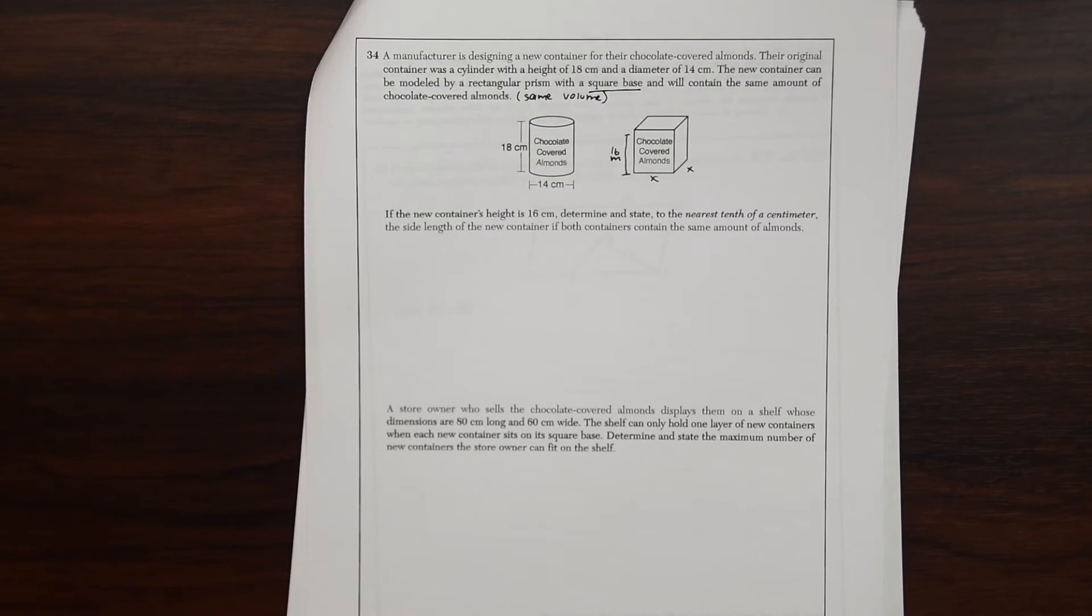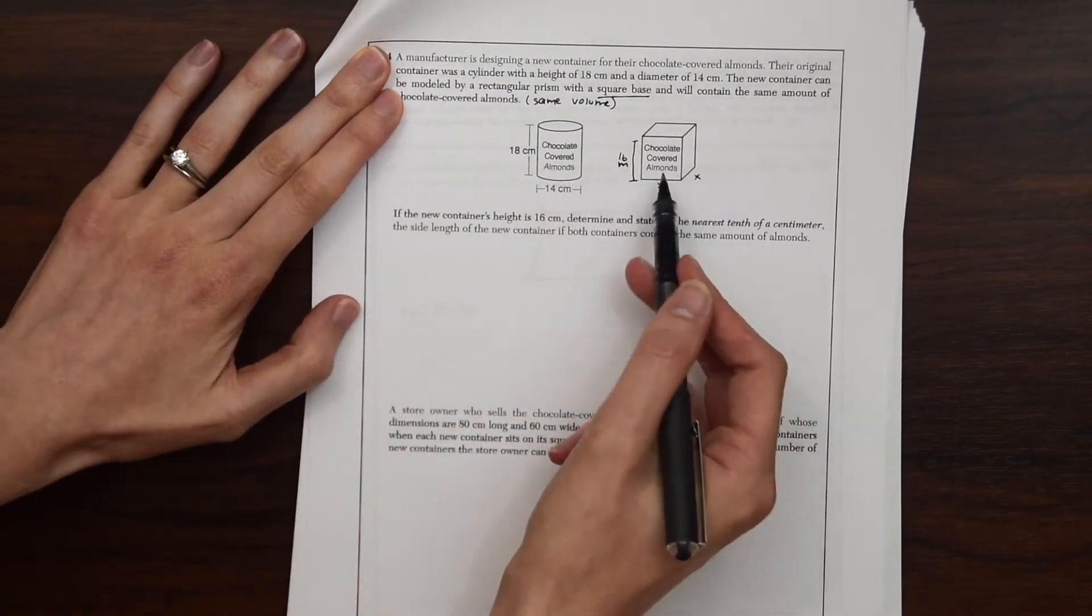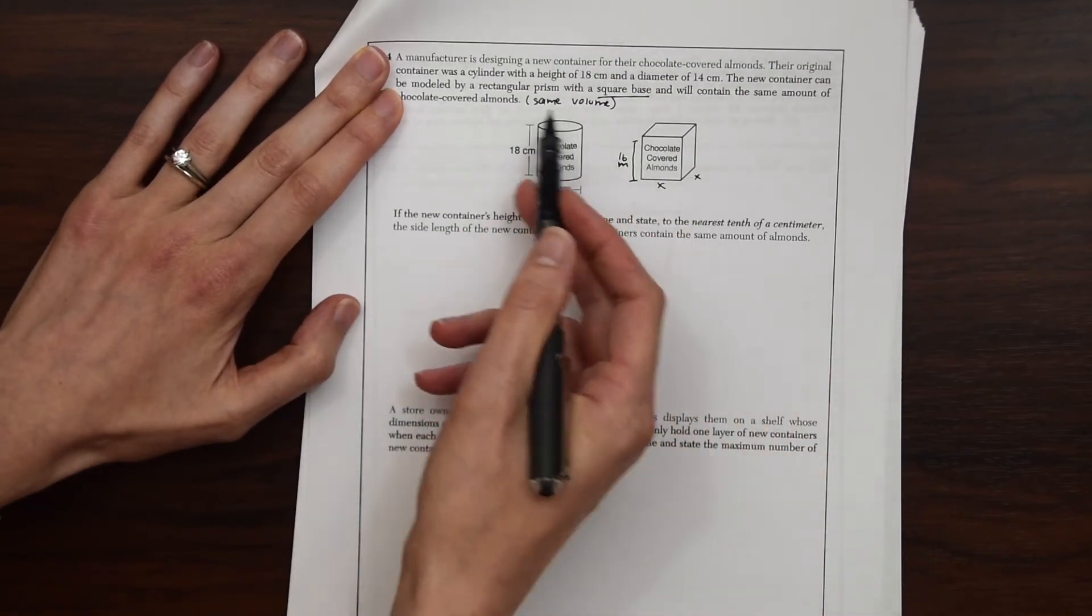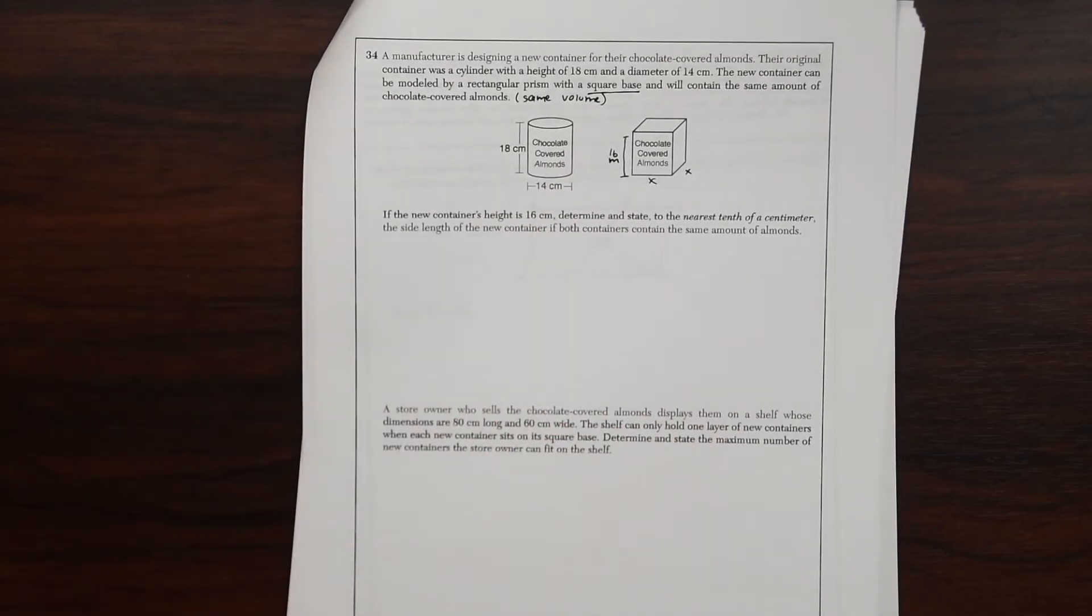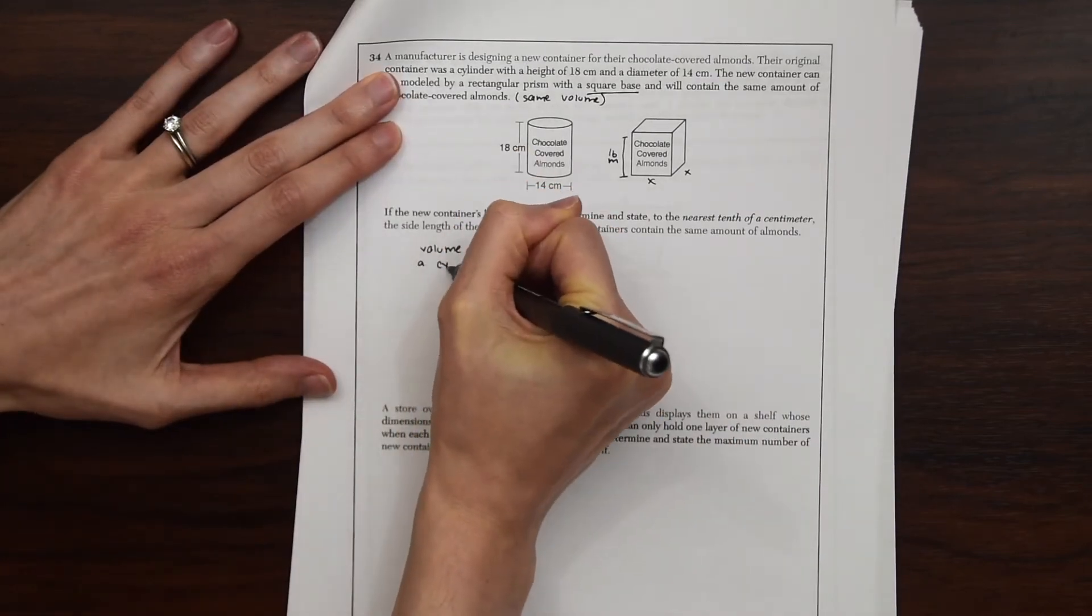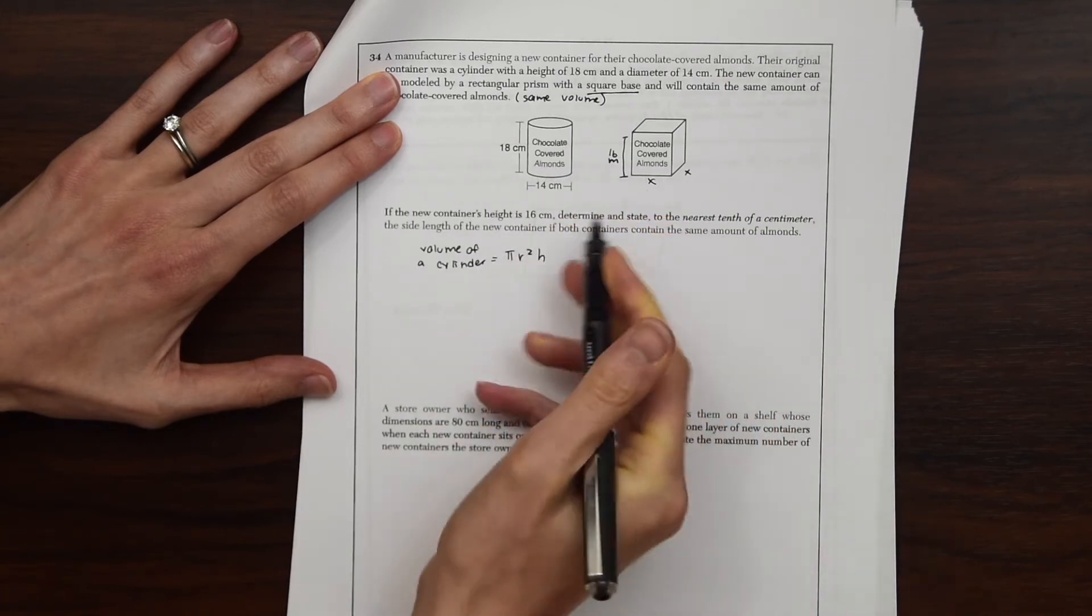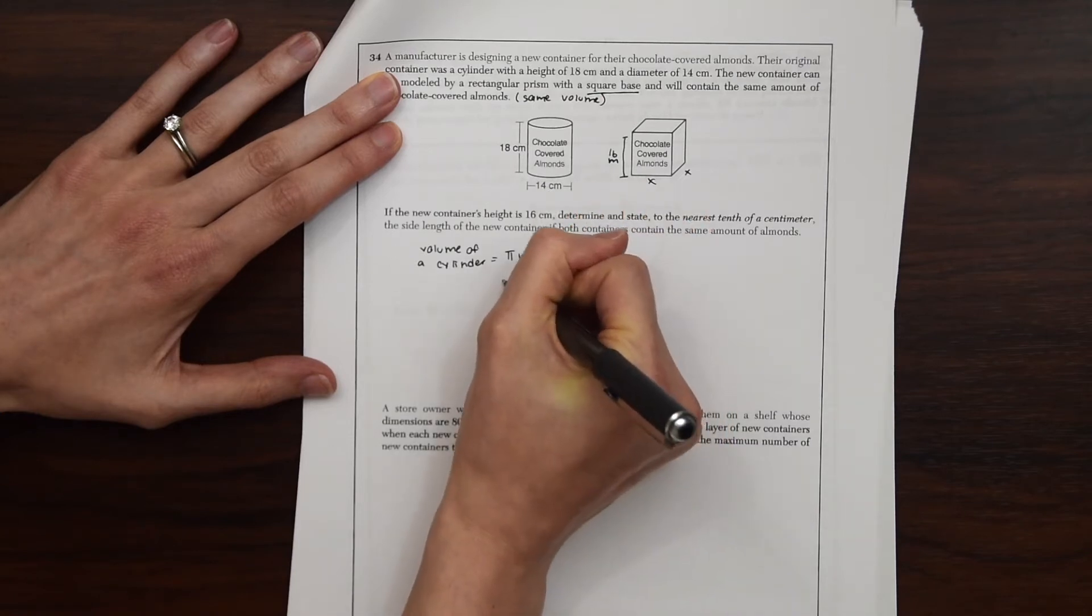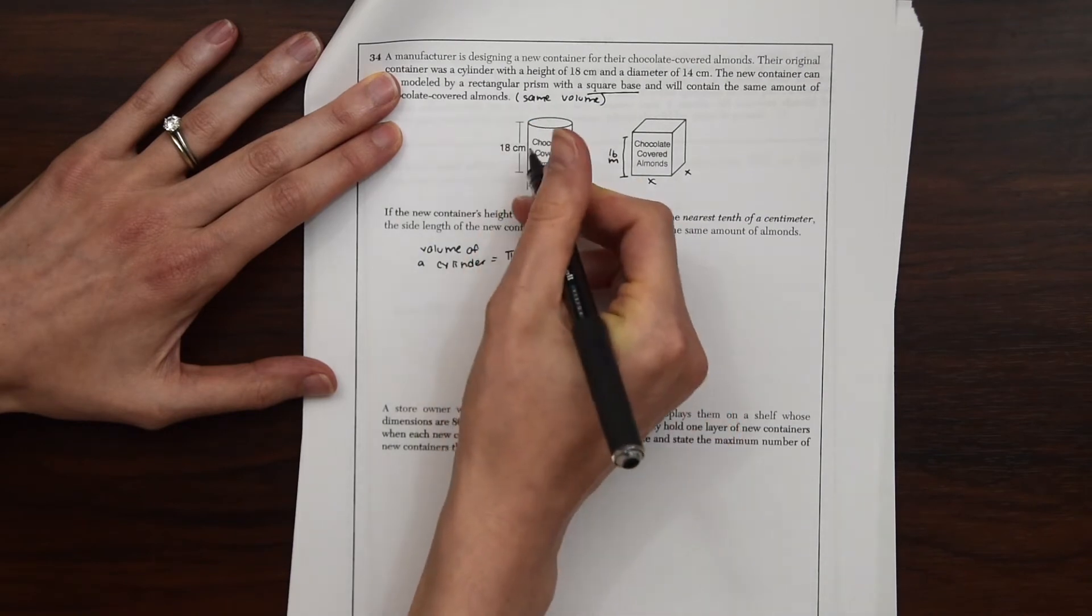So to do this, we're going to find the volume of this cylinder, and then we're going to try and use that to figure out these two side lengths because they're going to have the same volume. So if we look up our volume of a cylinder, it's equal to πr²h. So if we see the diameter is 14, we know that the radius is half of that, which is 7 squared, times the height h, which is 18 centimeters.